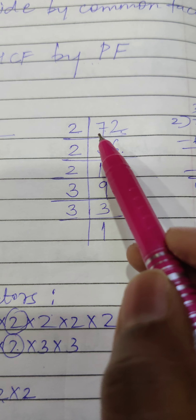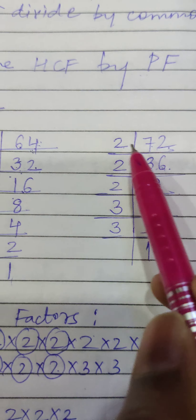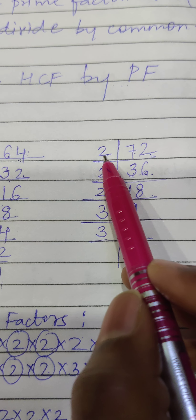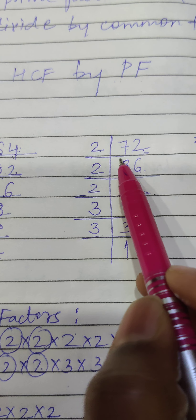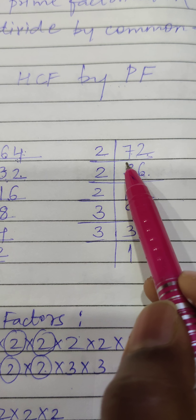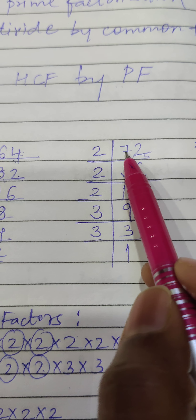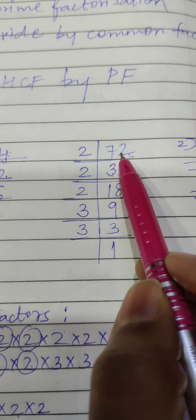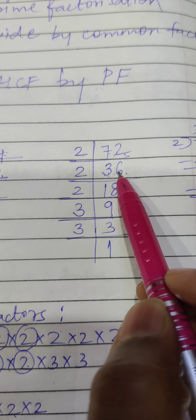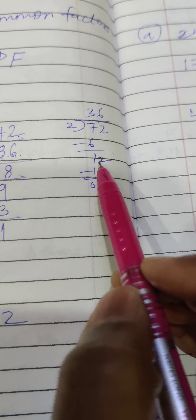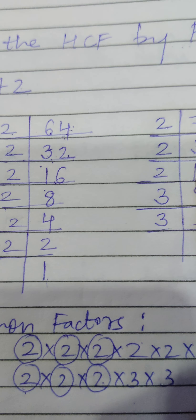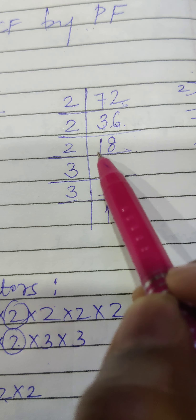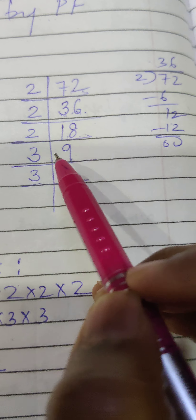Let's do 72 also through prime factorization. The last digit is 2, so it will divide by 2. We take 2: 2 threes are 6, 7 minus 6 leaves 1 remainder, so 1 and 2 becomes 12, and 2 sixes are 12. As I said, if it doesn't come directly, you can divide like this to get the answer. Dividing by 2 gives 36. Then again 2: 2 ones are 2, 2 ones are 2, 2 eights are 16, 2 nines are 18.